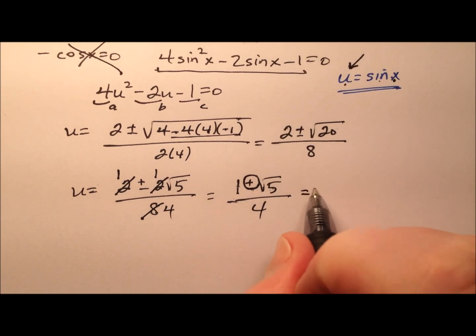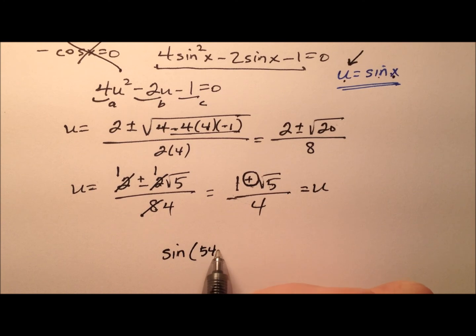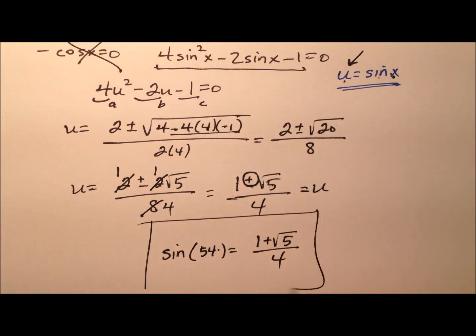So all in all, that equals u, so that means the sine of 54, this exact value, is going to be 1 plus the square root of 5 all over 4.